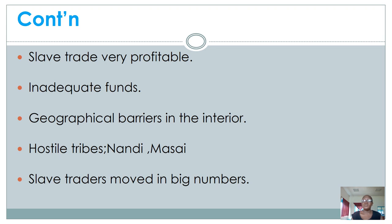The abolitionists faced a problem of inadequate funds. They needed funds to pay the people who were doing that work for them, and as one of the measures of ending slave trade, they also had to compensate slave owners — if you set a slave free, you were given some money in return. But they did not have all these funds, and this turned out to be a challenge.